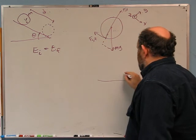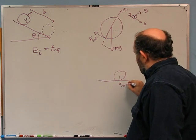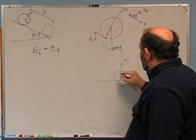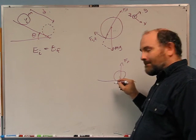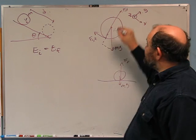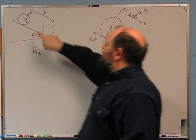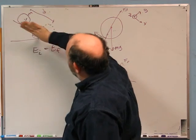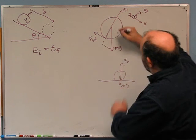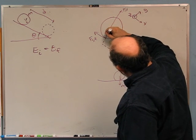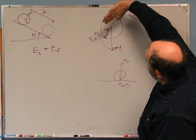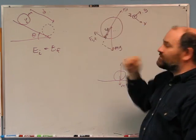If something is rolling without slipping at a constant speed on a horizontal ground like the pool ball, there is no static friction. Why? It's rolling at constant speed, so there's no angular acceleration. In this case there is an angular acceleration — it's going to start moving that way, so we need a torque into the board, which means static friction acts that way.